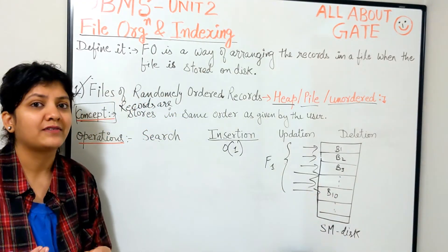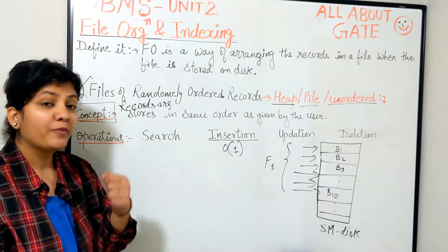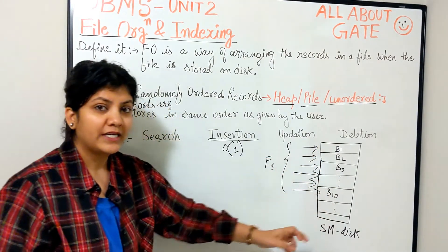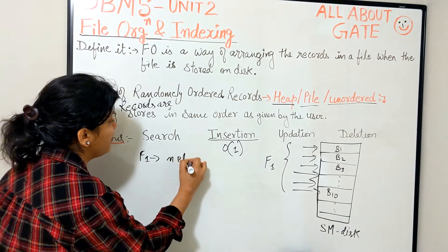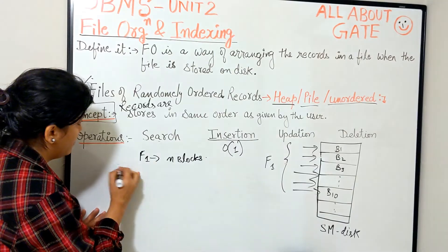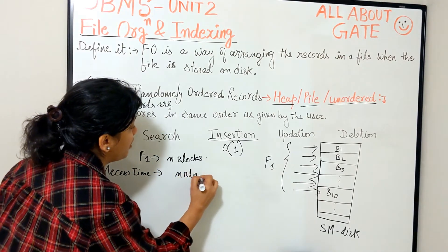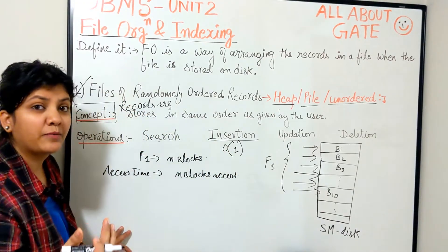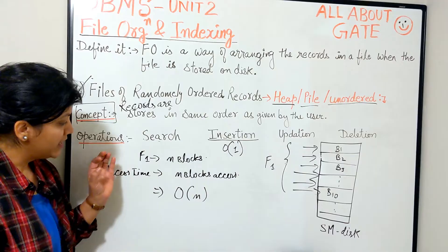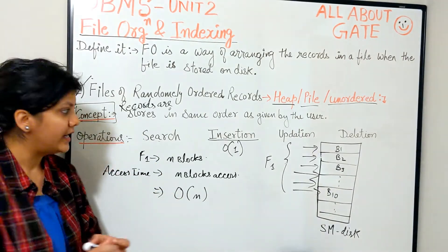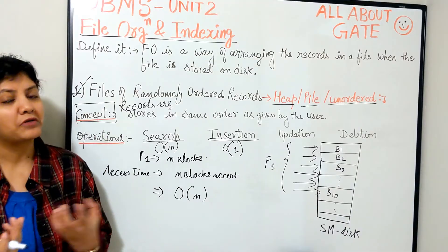We do not always run into best cases; there could be a worst case. What could be the worst case? I look here — not found; looked here — not found; came to the last block and found it there, or not found at all. So you access each and every block. If my file F1 is stored in a total of N blocks, then the access time is the access time of N blocks — which is O(N). Your access time is proportional to the order of N, which is a very high number. That is the search time in the worst case.